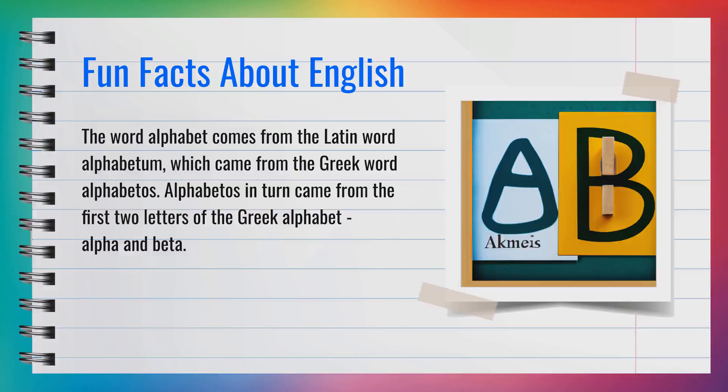Here's a fun fact about the English language: the word 'alphabet' comes from the Latin word 'alphabetum,' which came from the Greek word 'alphabetos.' In turn, it came from the first two letters of the Greek alphabet — alpha and beta.